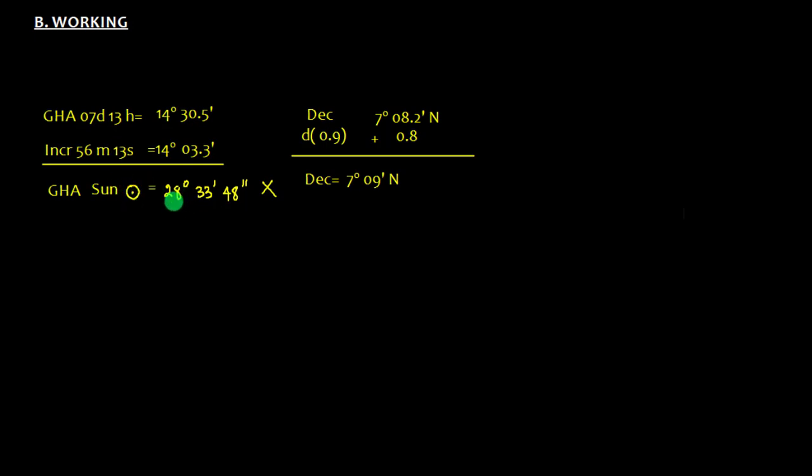Now we need to find the GHA. When we use the calculator, we might get in degrees minutes and second: 28 degree 33 minutes 48 second. The declination is 7 degree 09 minute. By the way, note you write N at the end, that is the usual way of expressing. Instead of writing the GHA like this, you can write in degrees minutes and one place of decimal, so 33.8. That's the correct way of writing, that will be much easier for you.